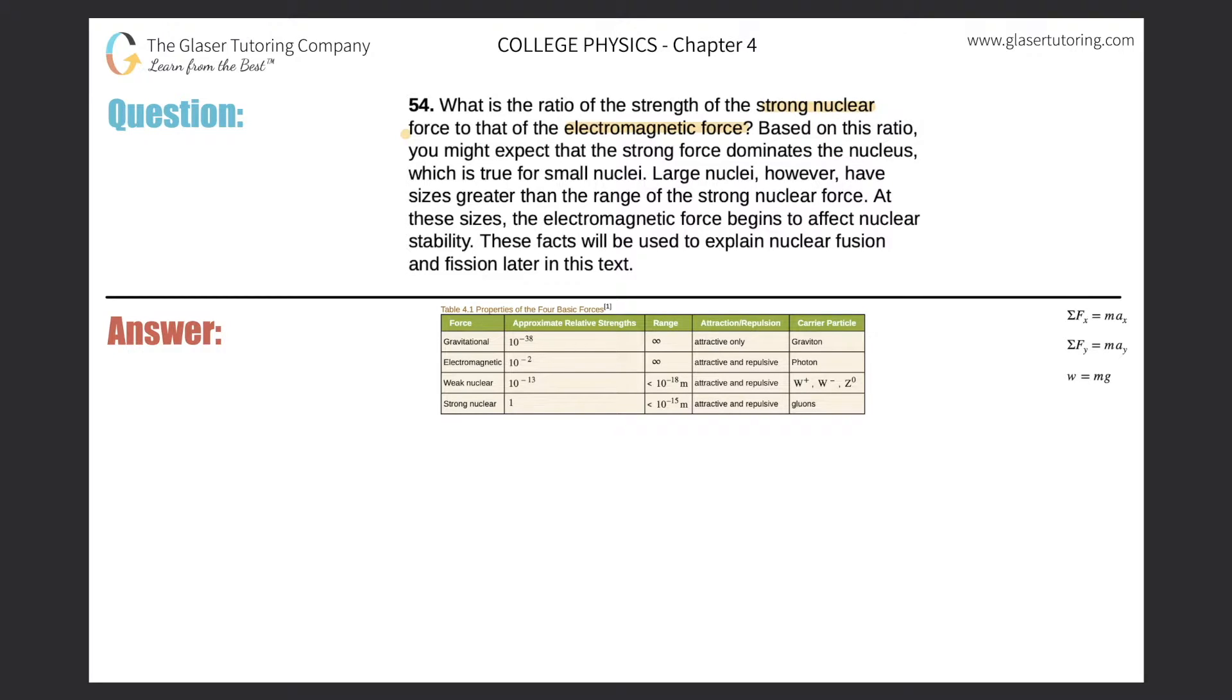Let's take a look at the table. We're comparing the nuclear to the electromagnetic, so the ratio is the force of the strong nuclear to that of the force of the electromagnetic.